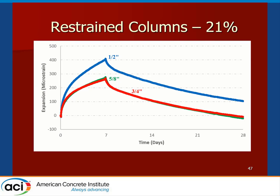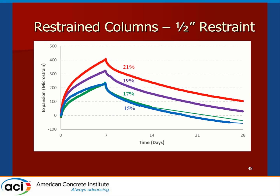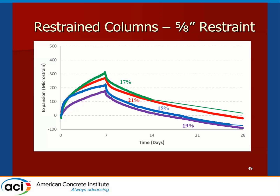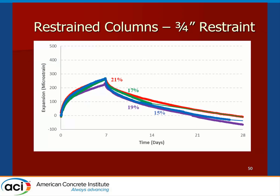Sorting the data by component percentage, at the half-inch restraint we see the expected layering — similar to the small-scale specimens — with component percentage gradually increasing peak expansion at seven days. However, at the 5/8-inch and 3/4-inch restraints, that trend gradually begins to tighten up. As the restraint level increases, the difference in peak expansion between component percentages diminishes.